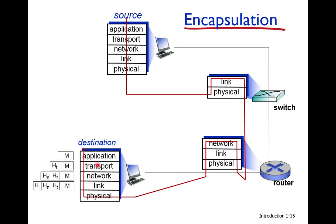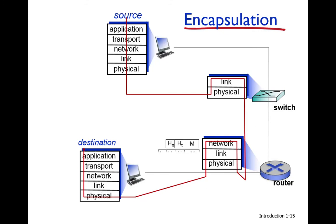When data is received at the link layer and it is confirmed to be for that node, it is passed to the network layer, which removes its header. From the network header, the network layer understands the packet is for it and passes it to the transport layer. From the transport layer header, the transport layer determines which application the data is for, and only that application receives the data.